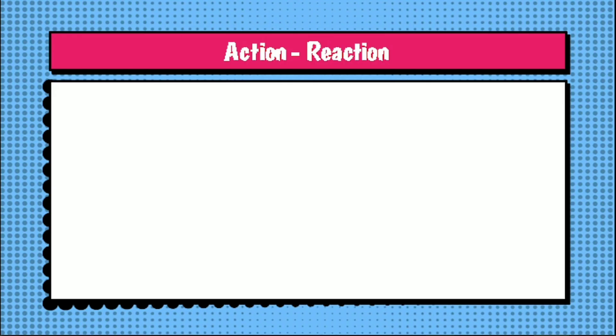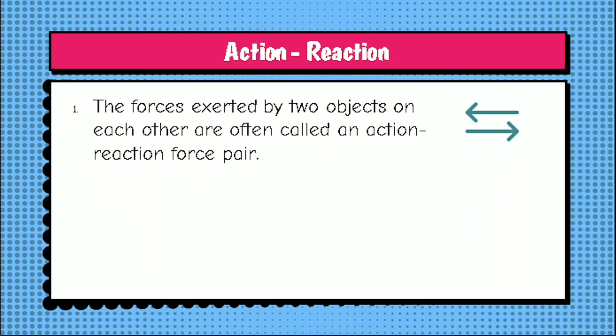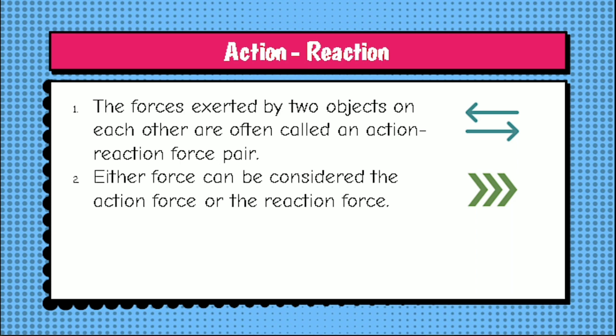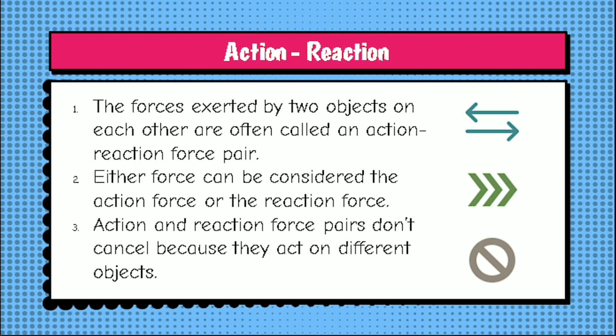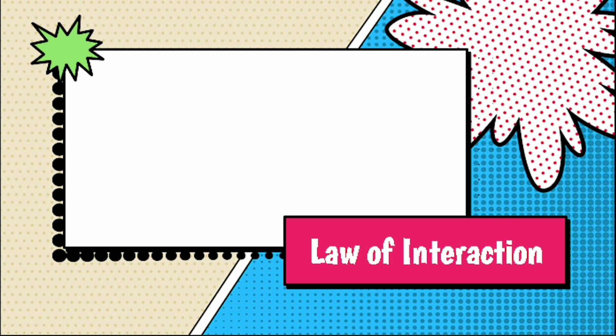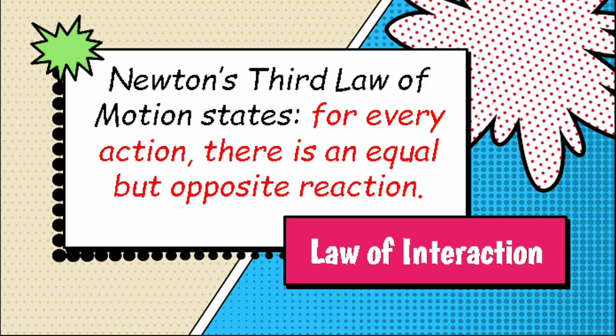For you to understand the third law of motion, let us describe the concept of action-reaction. The forces exerted by two objects on each other are often called an action-reaction force pair. Either force can be considered the action or reaction force, and action and reaction force pairs don't cancel because they act on different objects. We can state that for every action, there is an equal but opposite reaction. Newton's third law of motion is also known as the law of interaction.